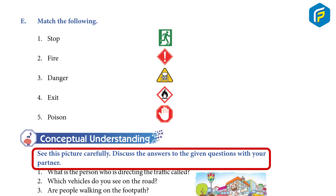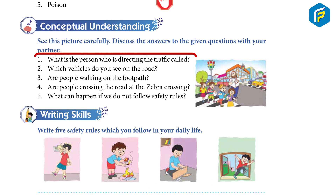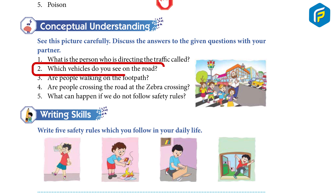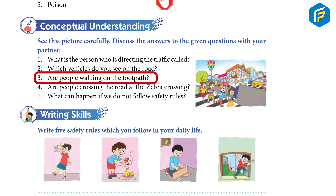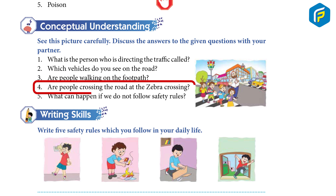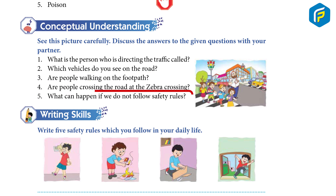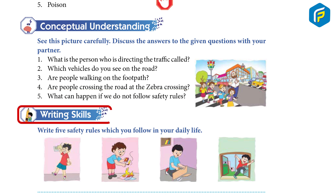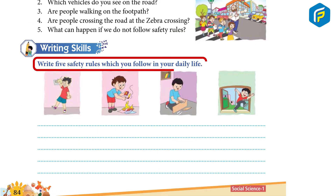Conceptual understanding: See this picture carefully and discuss the answers with your partner. One, what is the person directing the traffic called? Two, which vehicles do you see on the road? Three, are people walking on the footpath? Four, are people crossing the road at the zebra crossing? Five, what can happen if we do not follow safety rules? Writing skills: Write five safety rules which you follow in your daily life.